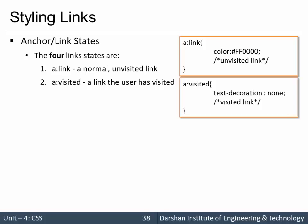To specify different properties for different states, we can use the anchor tag with a colon — for example, 'a:link' to target the unvisited link state and color it red, so all unvisited links will be colored red. Similarly, 'a:visited' targets anchor tags in the visited state, and we can set text-decoration to none for those visited links.